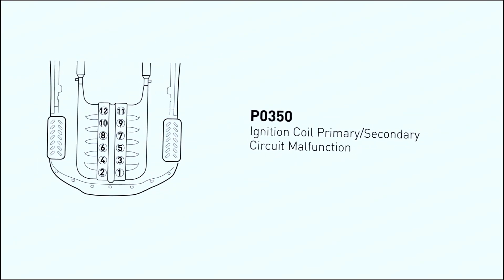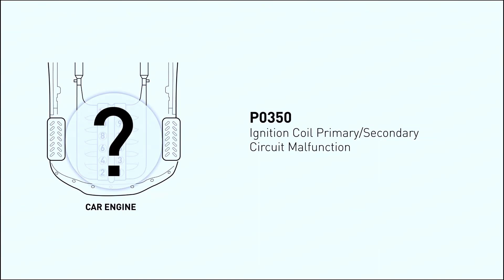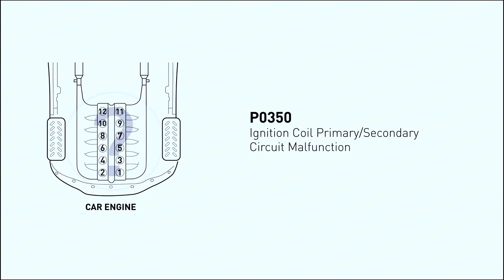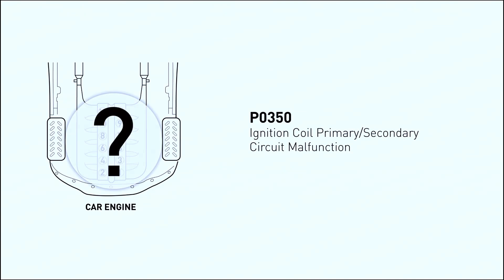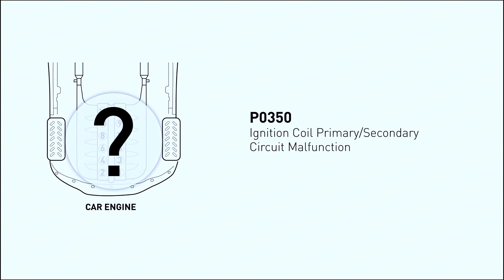The ignition coil is a vital part of your engine's ignition system. It takes the battery's low voltage and boosts it to create the high-voltage spark plugs need to ignite the air-fuel mixture. A P0350 code indicates a malfunction in the circuit that powers the ignition coil, including the coil itself, wiring, or even the PCM.